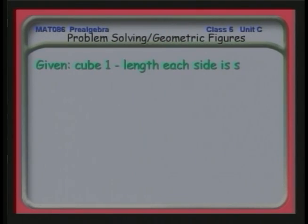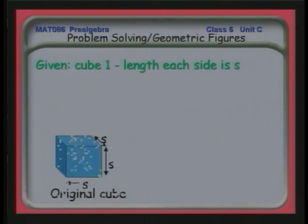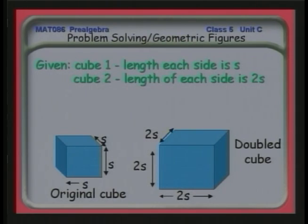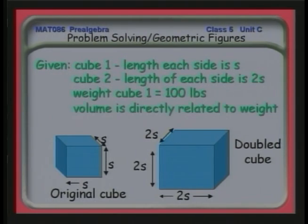Let's summarize the information. Cube 1 has a length of each side s — that's the original cube. The length of each side of cube 2 is twice that, or 2s — that's our doubled cube. We know the weight of cube 1 is 100 pounds, and the volume is related directly to the weight. If the volume doubles, the weight will double; if the volume triples, the weight will triple, and so forth.